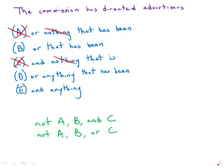Second of all, notice that we have an 'or' and 'and' split. We have a list of three elements. If I say 'not A, B, and C,' what I'm saying is the only thing I'm not allowing is the combination of all three of them together. In other words, A by itself is fine, B by itself is fine, A and C — any combination would be fine. The only thing that would not be fine is all three of them together.